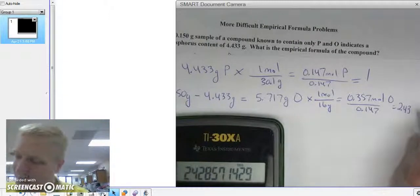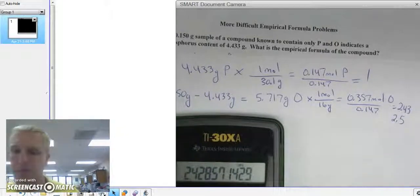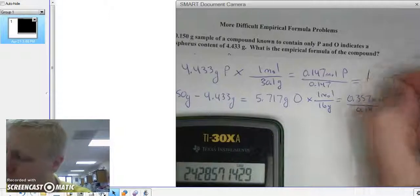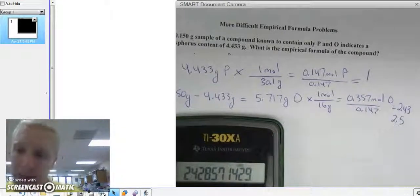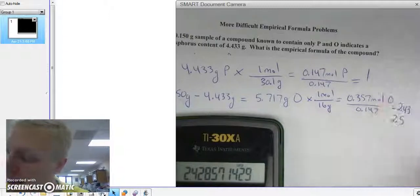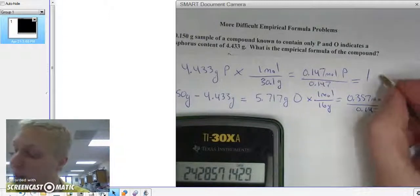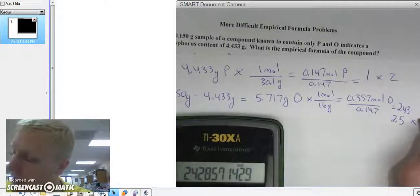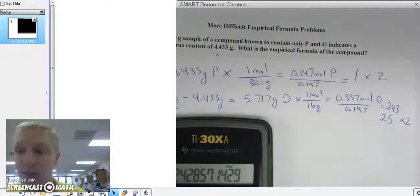Which is really close to 2.5. But we don't have whole numbers here. This is a whole number, but 2.5 is not. So we need to multiply both these numbers by a number that will make it a whole number. So I usually start with 2. And if both of these turn out to be a whole number after multiplying them by 2, I'm done.